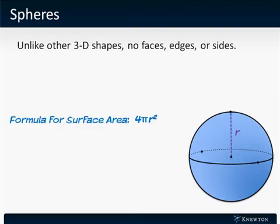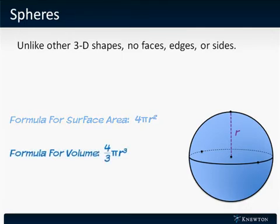The formula for the surface area of a sphere must be memorized. It's 4 times pi times r squared, the square of the radius. The formula for the volume also must be memorized. It's 4/3 times pi r cubed, the radius cubed.